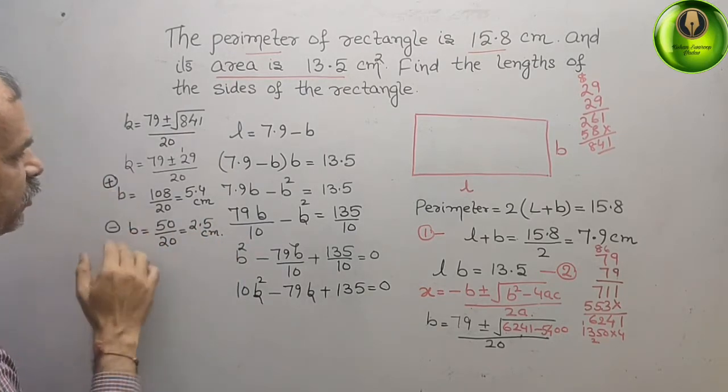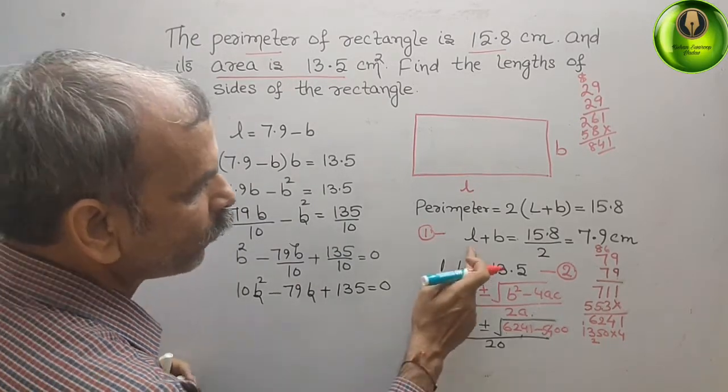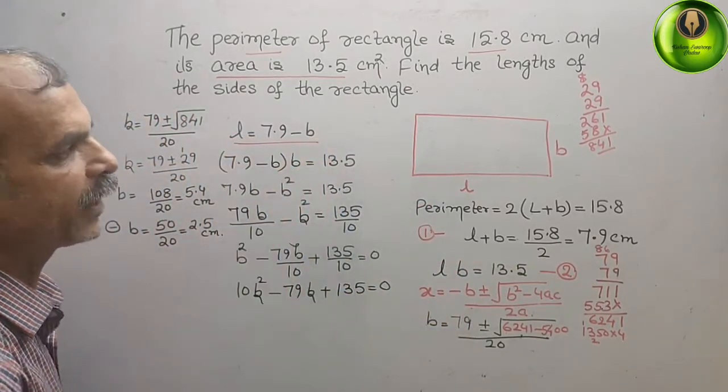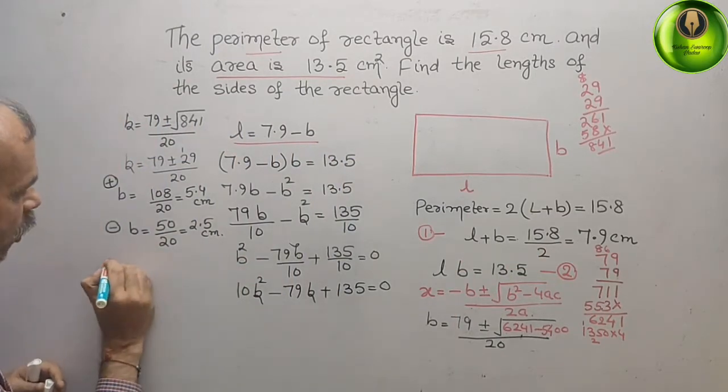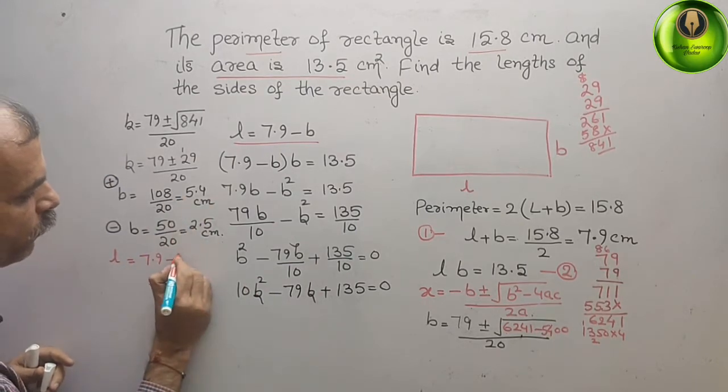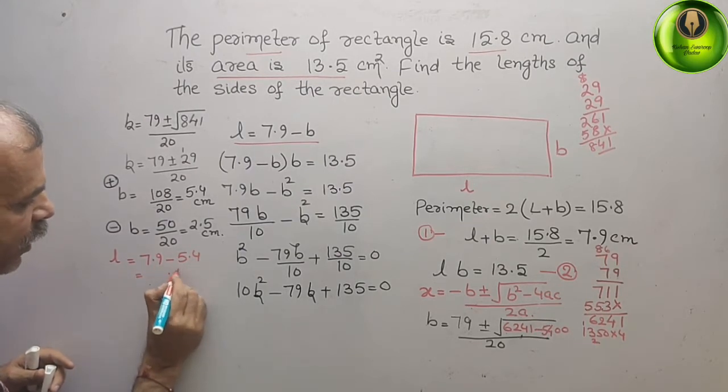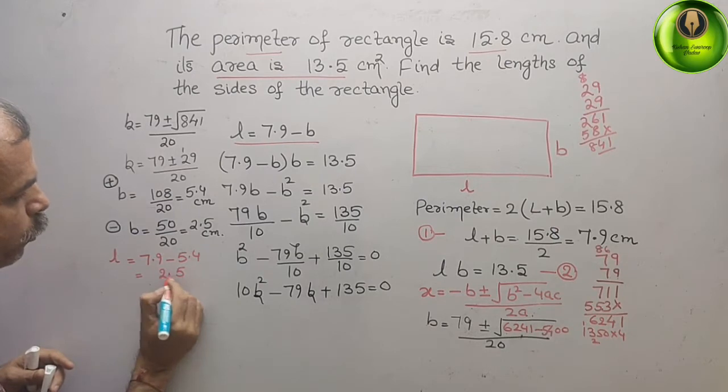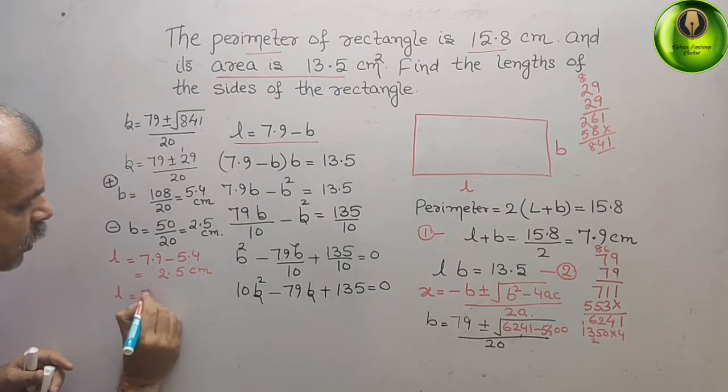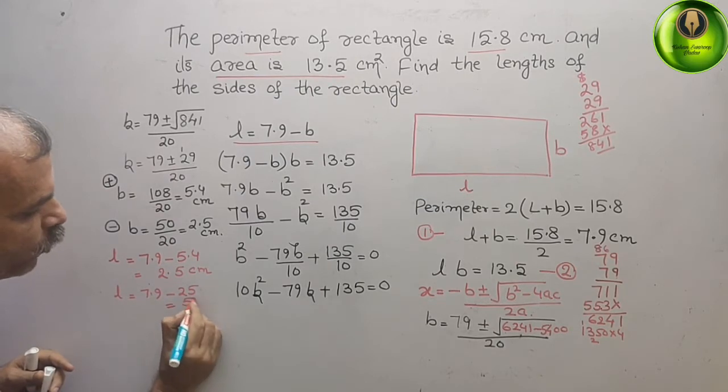If B is this value, what is your L? That we have to find out. So, now, we will go for, which value? See this, L is equal to 7.9 minus B. So, now, we will go for, L is equal to 7.9 minus 5.4. So, that is equal to, we can say, it is 5 and 2, 2.5 centimeter. Or, L is equal to 7.9 minus 2.5. This is equal to 5.4 centimeter.